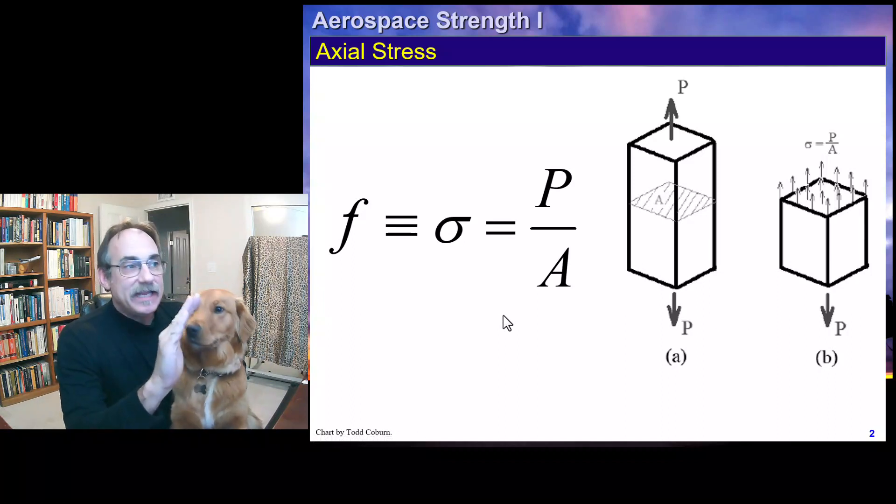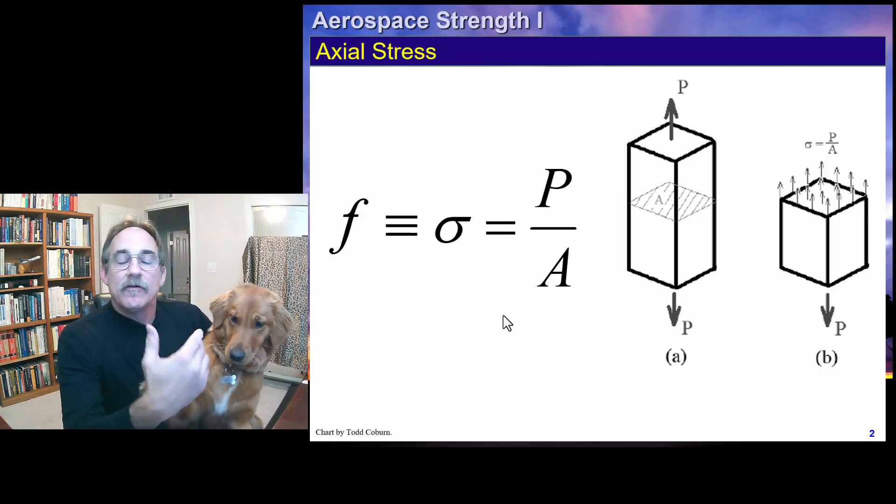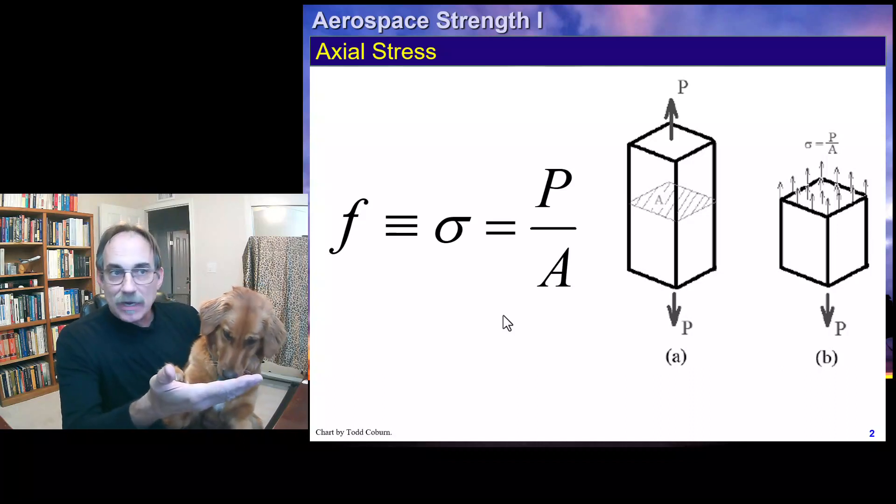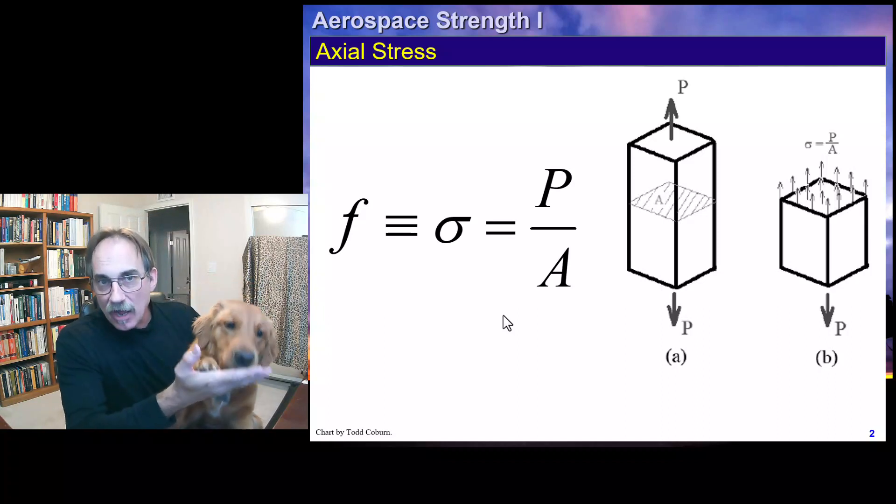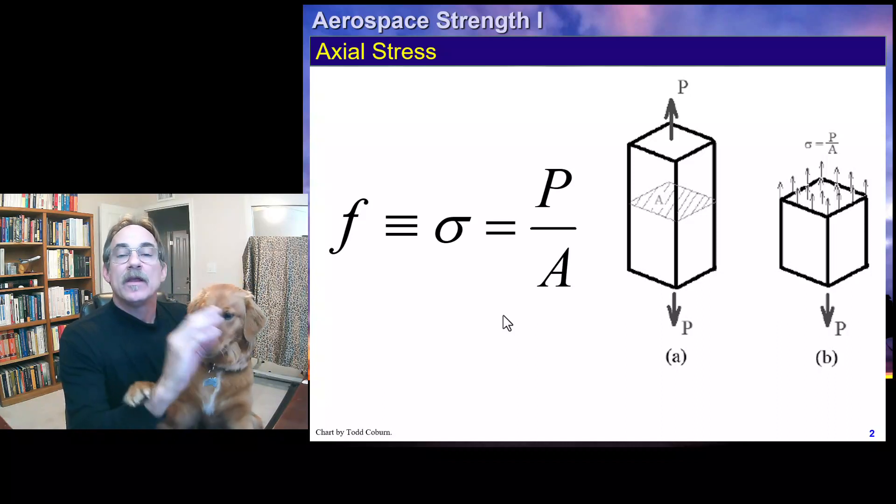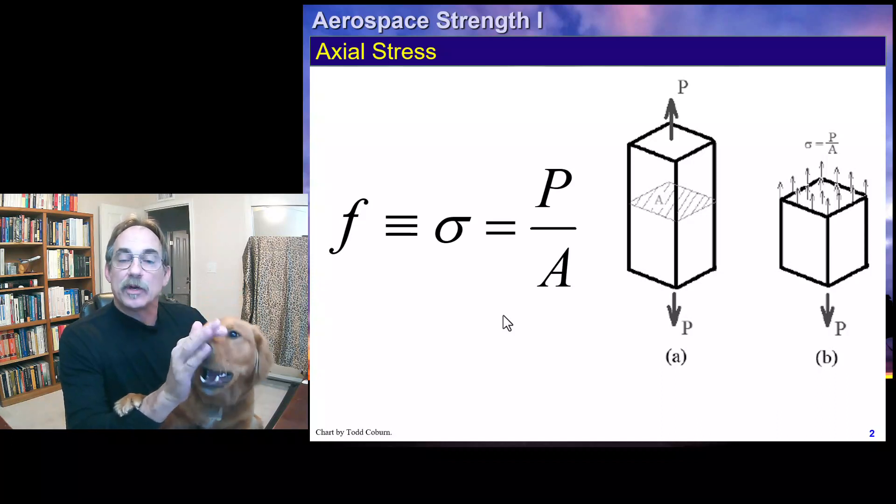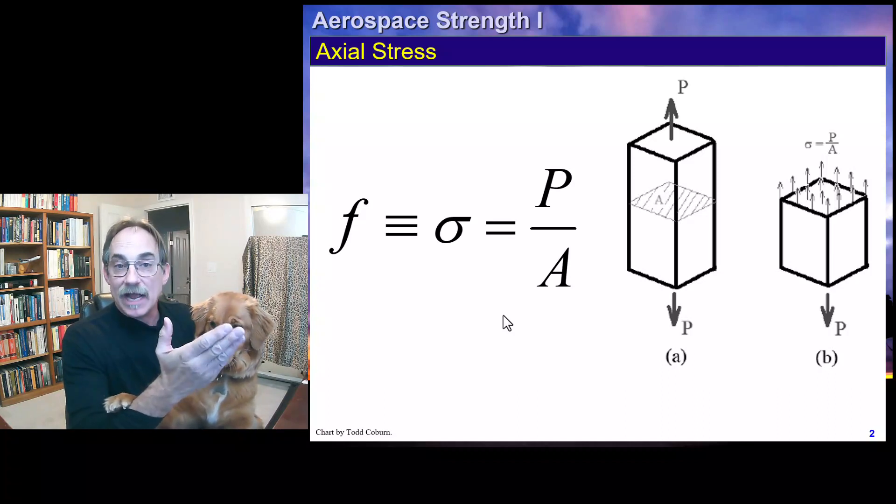Sigma is the symbol used for stress nearly worldwide for axial stresses. However, in aerospace, lowercase f is often used for the calculated stress. Whether you use sigma or f for that stress P over A, you're normally looking for the average stress on the section, which is simply P over A. Make sure that if you're asked about an axial stress, you know to use P over A for an axial load.